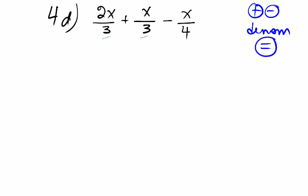So these two are already good. You could write it over the same three and then operate the tops. 2x plus x gives you 3x, minus x over 4. The problem is here when the 3 and the 4 are different.